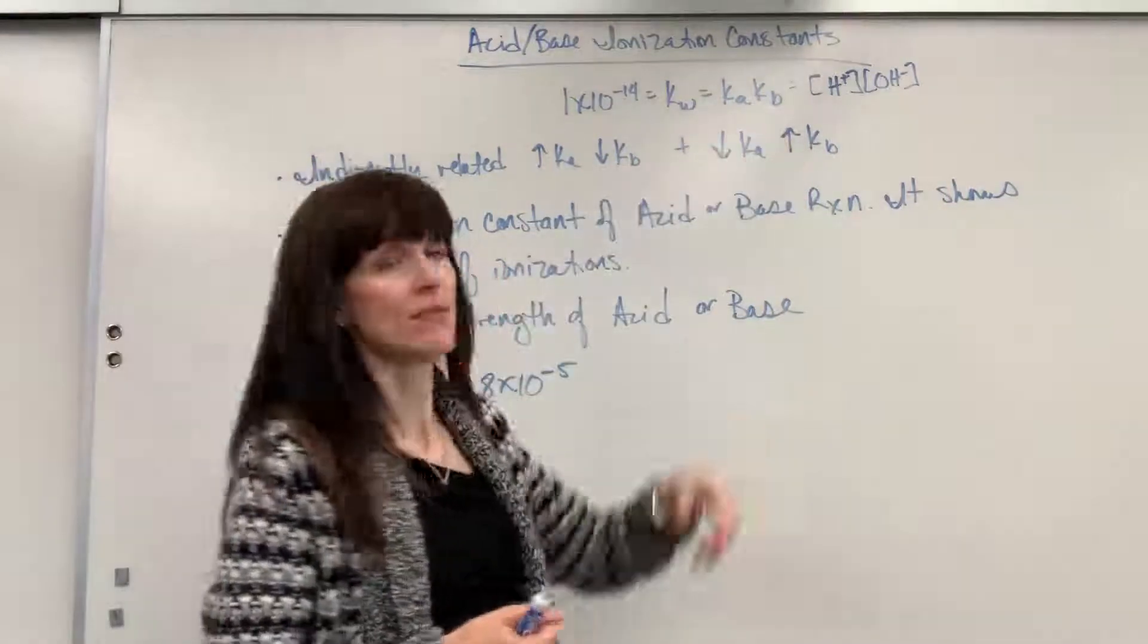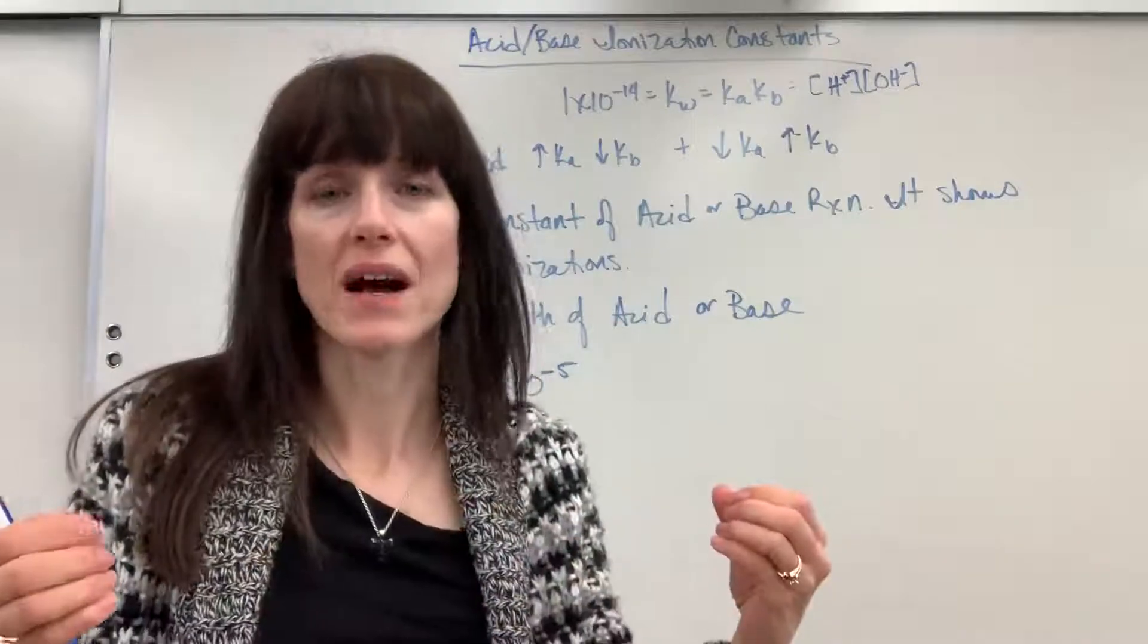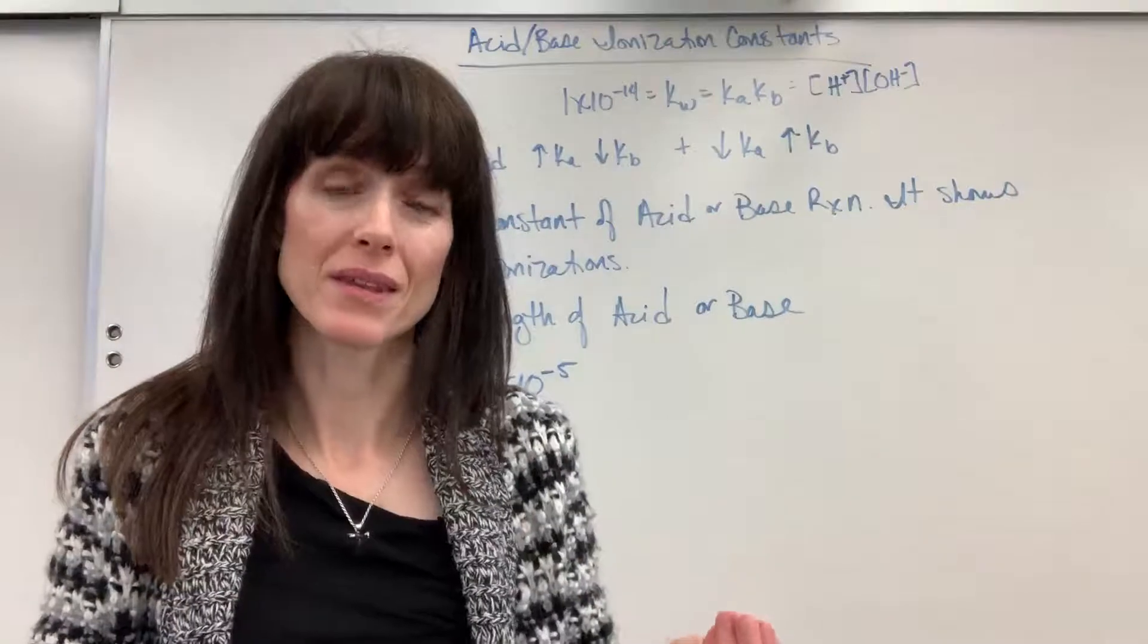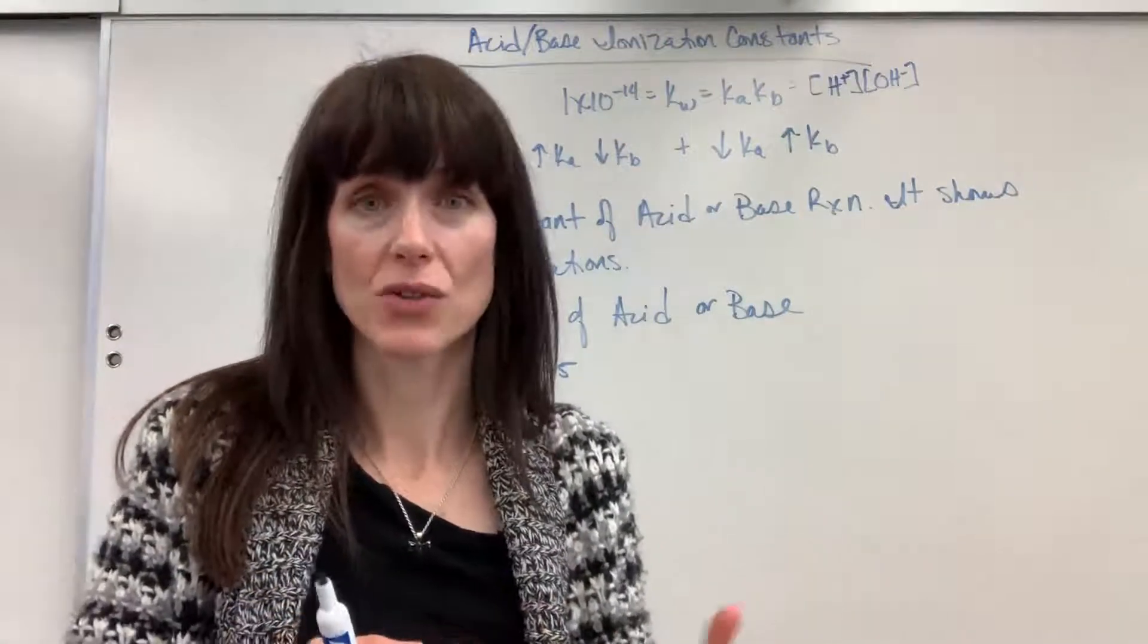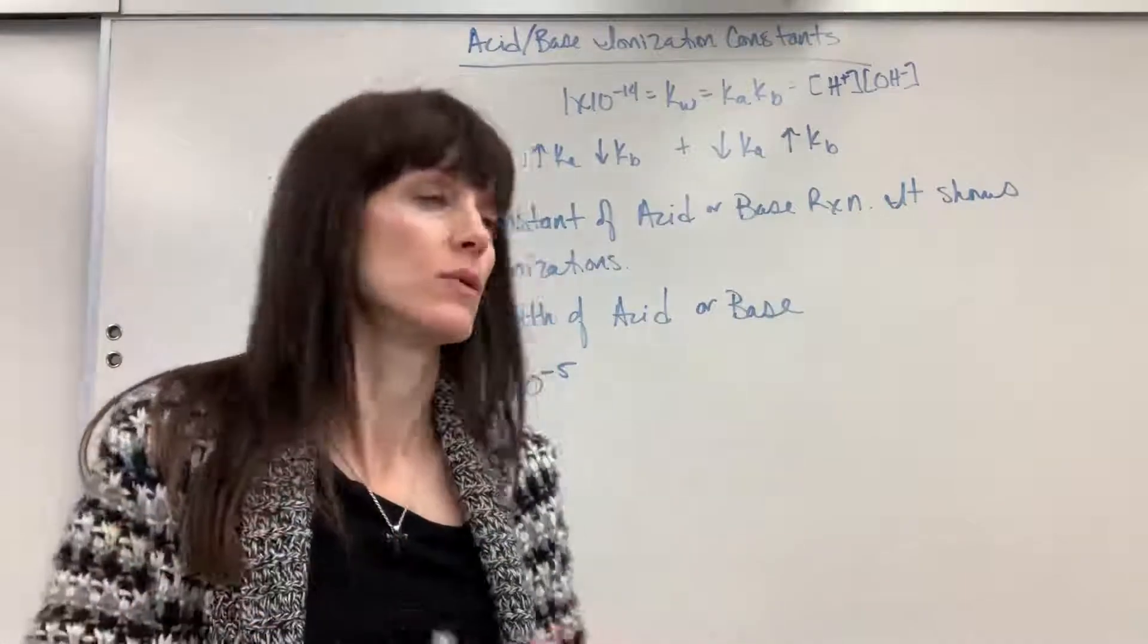So, the Ka, Kb value, they will show us the bigger the number, the greater that ionization, that breaking apart, becoming an ion. The smaller the number, the even weaker the acid or base, the less that it will break apart, that it will ionize.